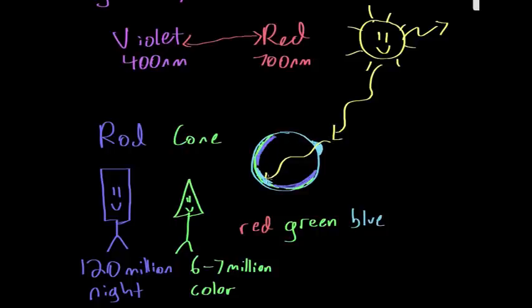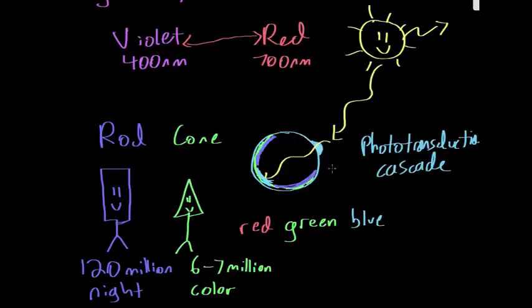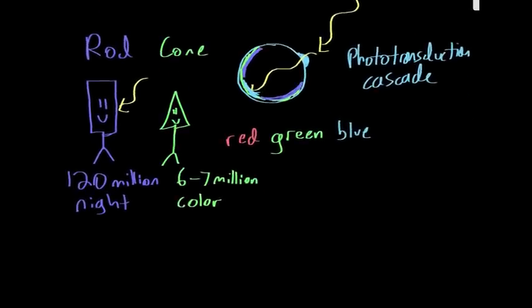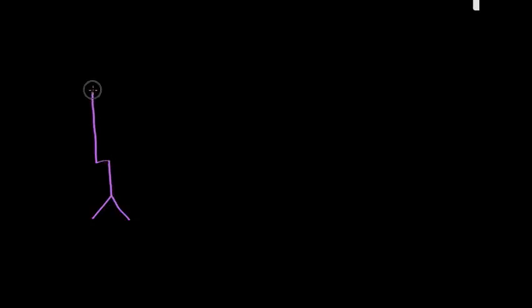So what happens once light enters the eye, hits the retina, and reaches the rods or cones? The next step is something called the phototransduction cascade. This is basically a set of events that occurs as soon as light hits a rod or a cone. We'll go into the phototransduction cascade in more detail in the next video, but let's cover what occurs at the end of it, focusing on the rod for now.